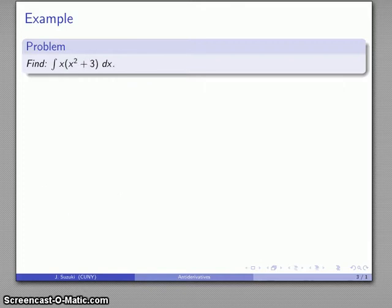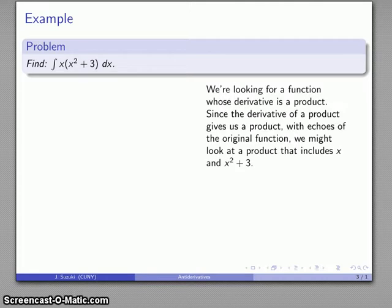Alright, how about the anti-derivative of x times x squared plus 3? So let's do a little bit of analysis. This function that we're looking at is a product of two things, and the derivative of a product gives us a product. One of the things that we might remember from the product rule is we always end up with echoes of the original function. So what we want is some function that's going to include x squared plus 3 and also x.